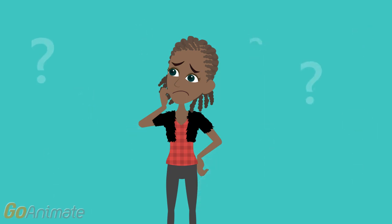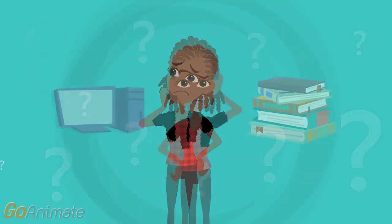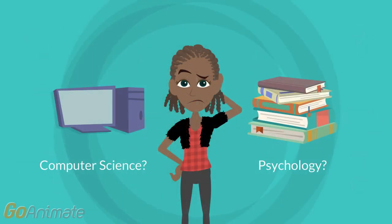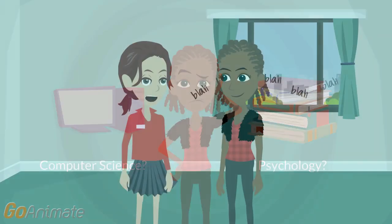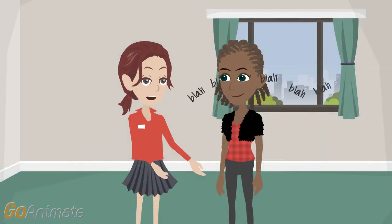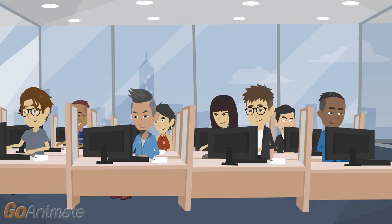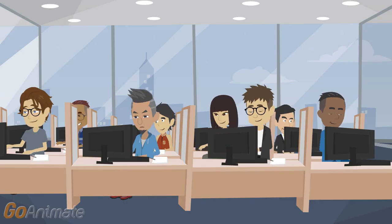This is Alice. Alice is a sophomore and she needs to pick her major. She doesn't know what to choose. She likes computer science and psychology equally. But her friends tell her that she should not go for computer science because mostly boys take computer science, so it can be hard for girls.